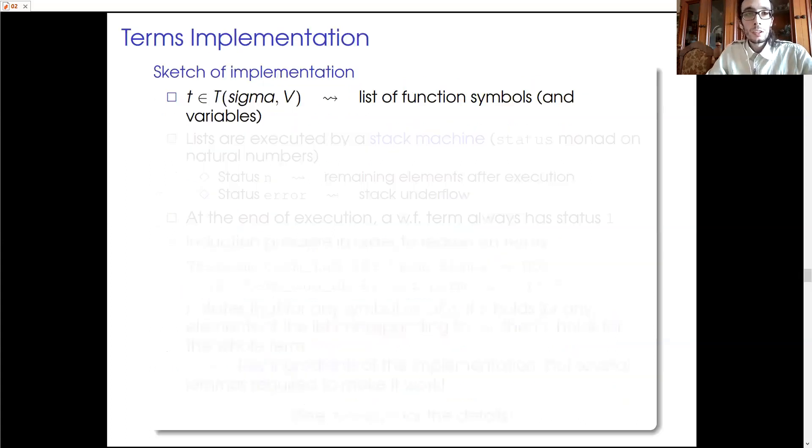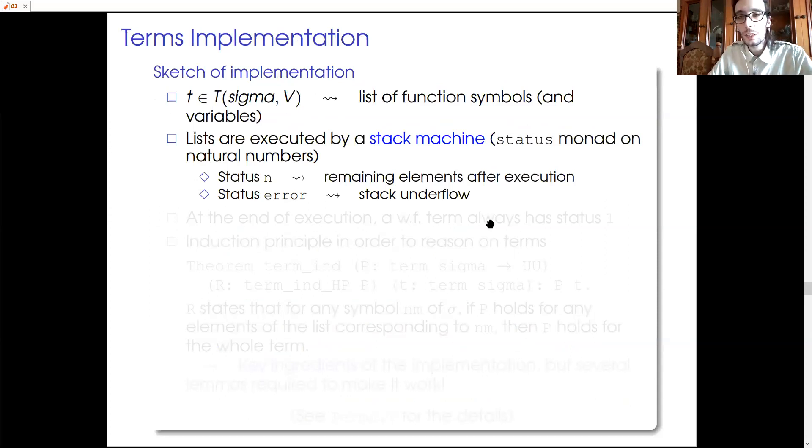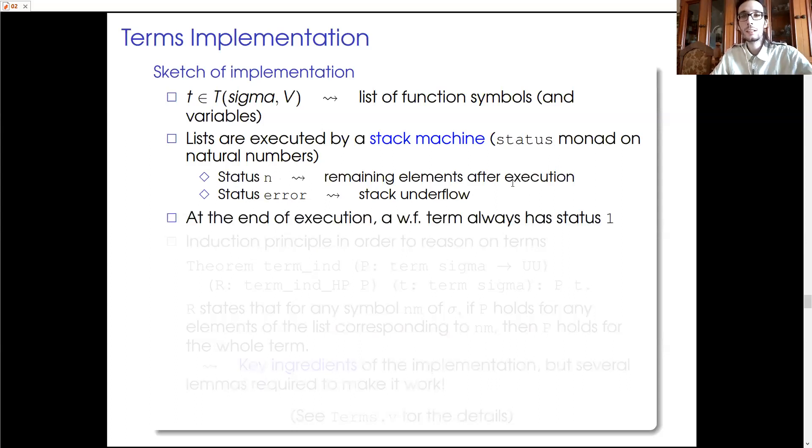That is possible because we have a specific implementation of terms that I want now to sketch. So, a term is just a list of symbols and variables. This list is thought to be executed by a stack machine that is implemented in UniMath by means of a maybe monad for a status on natural numbers and other trickeries for evaluation. So that an execution returns a status error and then we have a stack underflow and we do not have a well-formed term. Otherwise, we have a status N and this gives us a measure of the remaining elements after the execution.